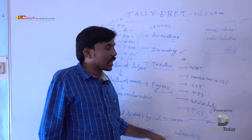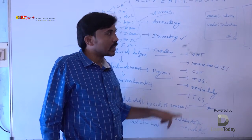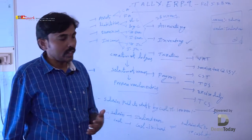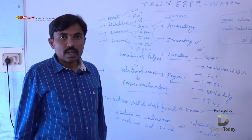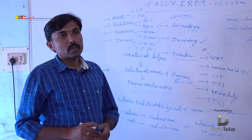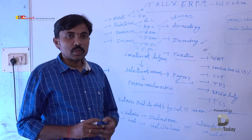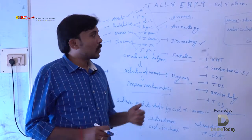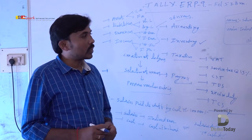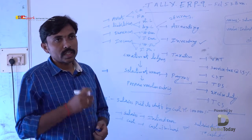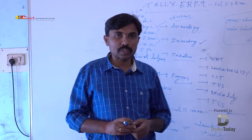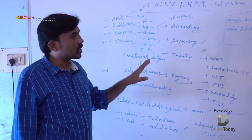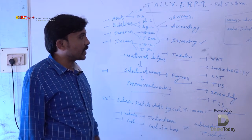In creation of transaction entries in Tally software, there are different types of vouchers: Contra voucher, Payment voucher, Journal voucher, Purchase voucher, Sales voucher, Credit note, Debit note, etc. Not only accounting vouchers — there are also Inventory vouchers and Order vouchers. In accounting vouchers, these vouchers are used for creation of transaction entries. You need to know which entry is created in which type of voucher.